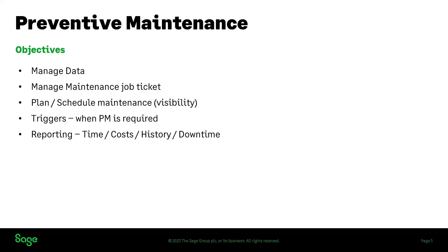The need for preventive maintenance was brought to us by the pre-sales team based on feedback from prospective customers, and then developed by the North America Center of Excellence. The objectives were: A, to manage data related to maintenance tasks, maintenance component inventory, maintenance-related resources and equipment, and the associated costs. Another objective is to manage the maintenance job ticket — used to identify maintenance tasks that need to be performed, by whom, and what components are required — and to capture both planned and actual costs.